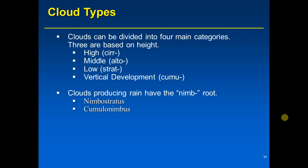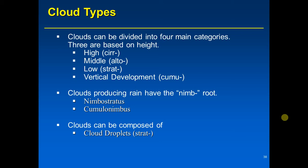Cumulonimbus are the thunderstorm clouds. Clouds can be composed of water in one of two forms: liquid droplets or ice crystals. Low clouds, being close to the ground and warm, are made exclusively of liquid droplets.